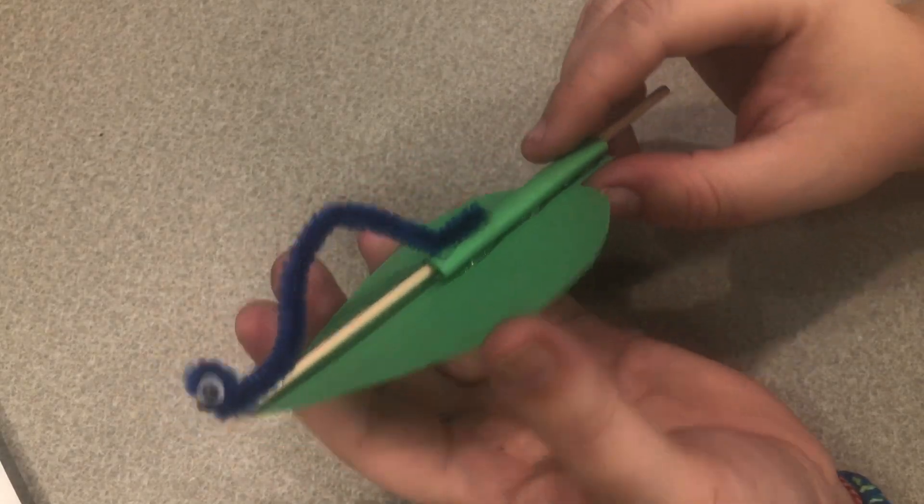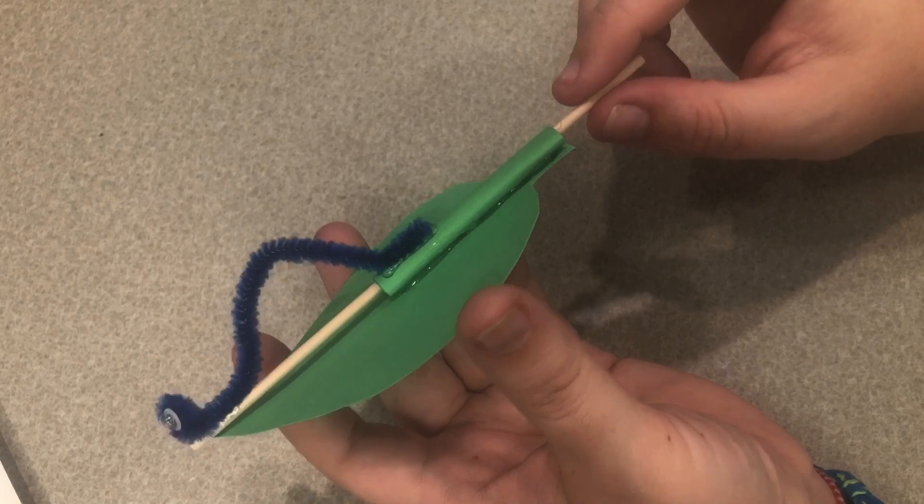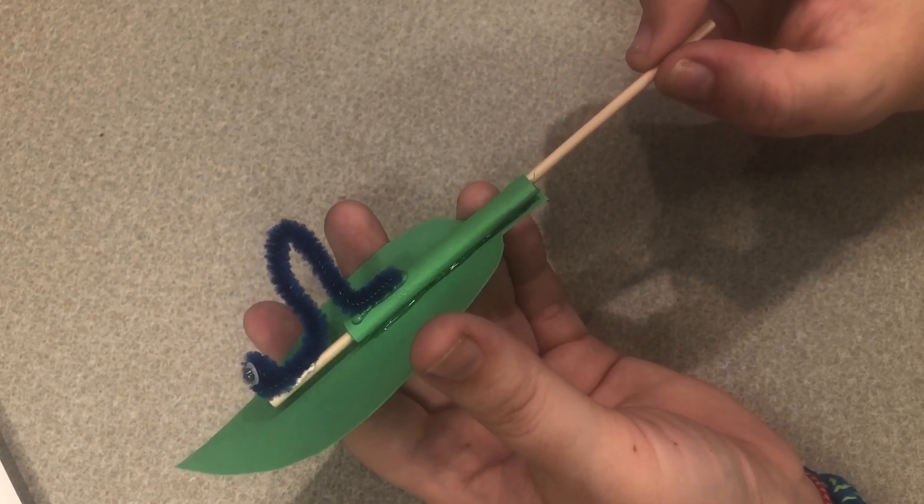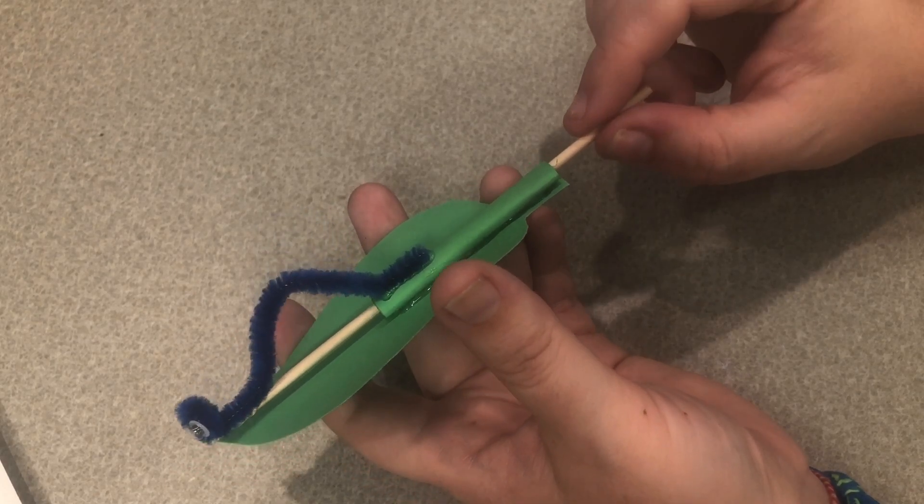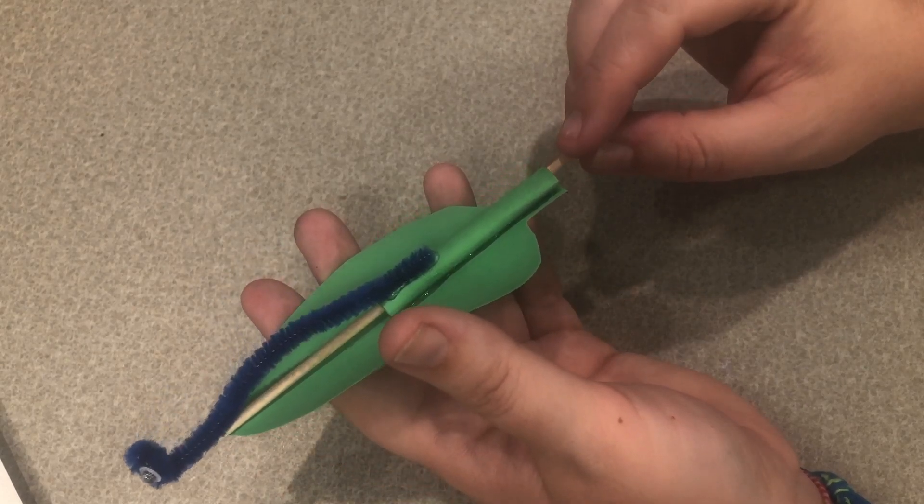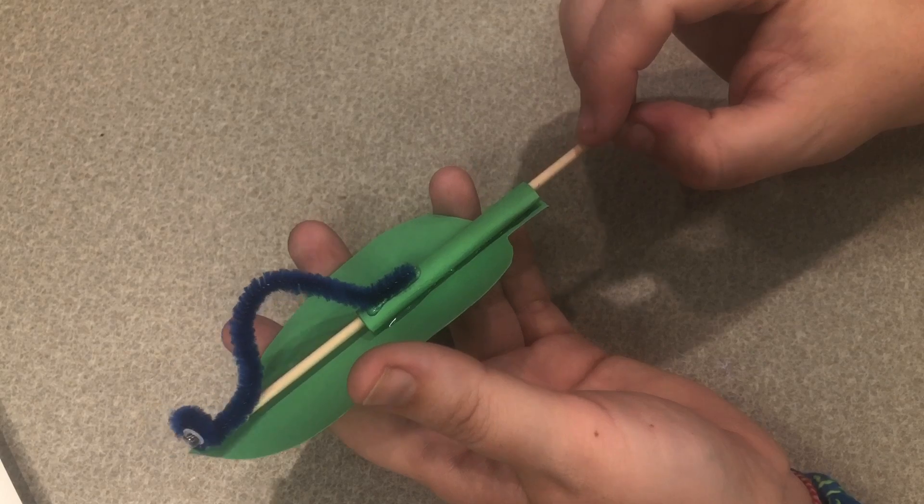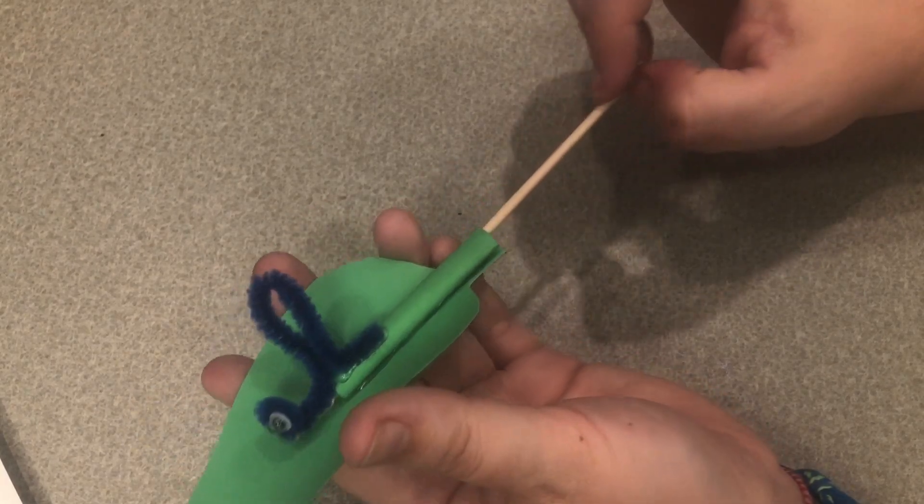Once all your glue has dried you can see our worm looks like he's bent right now and as we pull the dowel rod back he squishes up even more and as we push it forward he stretches back out. You can stretch him out all the way or just a little bit. You can make him make little small movements or you can make him go big.